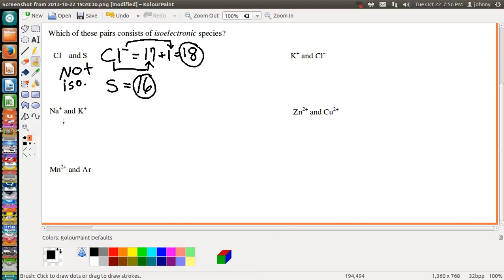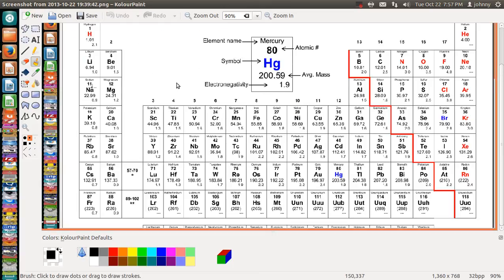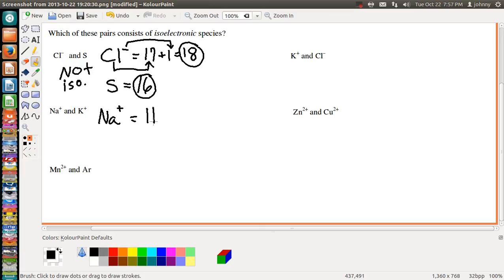Now let's look at Na⁺ and K⁺. Na⁺, let's see what that is on the periodic table. Na, if it's neutral, has 11 protons. This plus 1, in determining the number of electrons, actually tells us to subtract 1. So Na here only has 10 electrons.